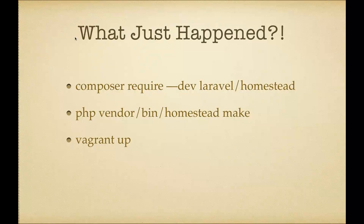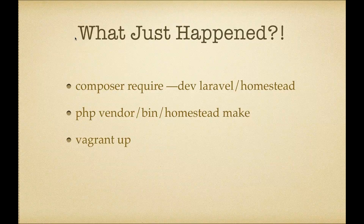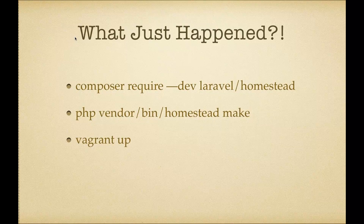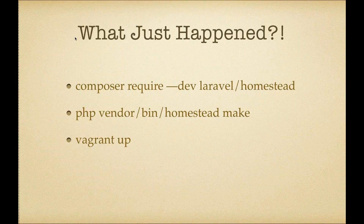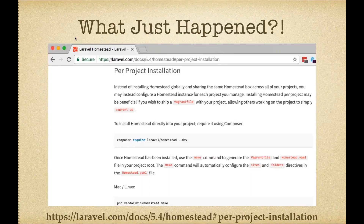So what exactly happened? We required our Homestead dependency into Composer — that was our first command. Our second command was vendor/bin/homestead make, which runs and copies the files from the Homestead folder to our project root and customizes one of the main configuration files for us. Then we run Vagrant up, which actually tells Vagrant to do something with the virtual machine we just created.